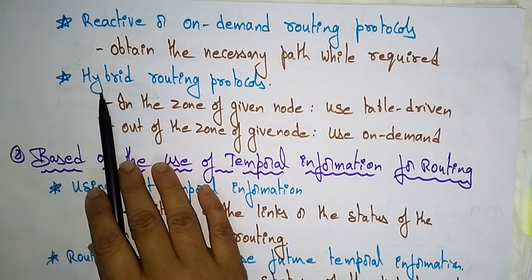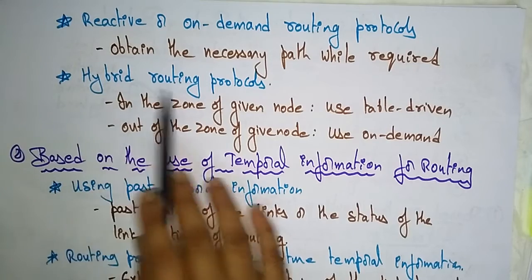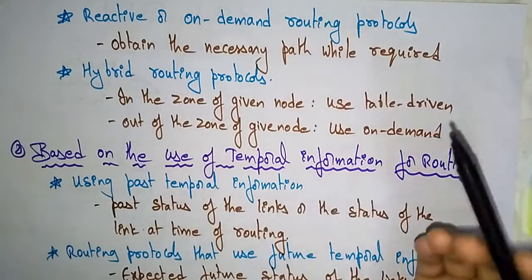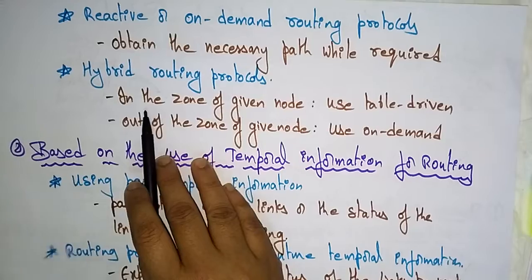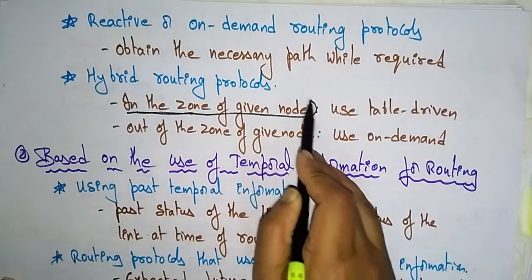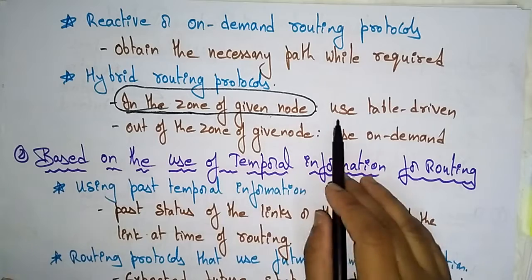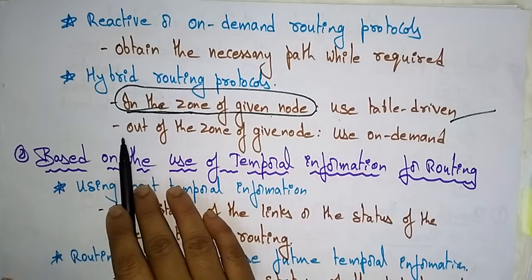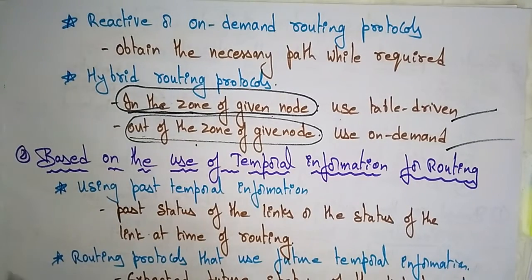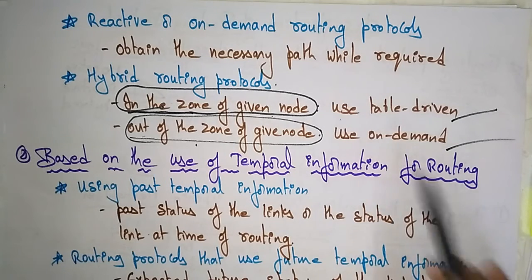The third sub-type is the hybrid routing protocol, which is a combination of both reactive and proactive — that is, table-driven and on-demand. If a node is present within the zone of the given node, then use table-driven. If the routing is out of the zone of the given node, then use on-demand. So the hybrid routing protocol uses table-driven within the zone and on-demand outside the zone.